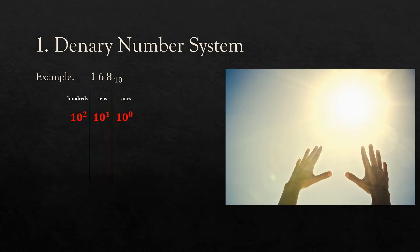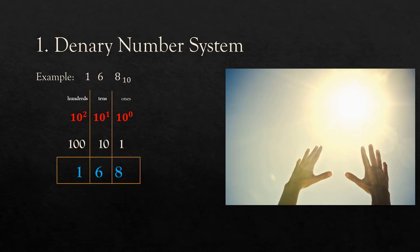Let's look at an example of how the denary number system works. Here is the number 168 in base 10. Base 10 means we have 10 to the power of 0, 10 to the power of 1, and 10 to the power of 2. We know that 10 to the power of 0 is 1, any number to the power of 0 is 1, 10 to the power of 1 is 10, and 10 to the power of 2 is 100. So if I have 168, that means I have 8 ones, 6 tens, and 1 hundred.